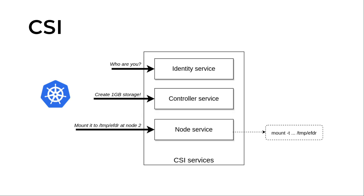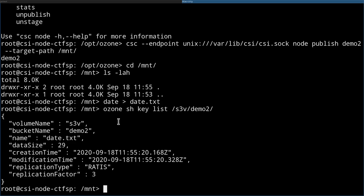So this is the CSI service. There are three services that must be implemented: the identity service, which provides information about the version and implemented methods; the controller service, which creates storage; and the node service, which mounts it. It's quite straightforward, and once this interface is implemented, any compatible container orchestrator can communicate with our service.